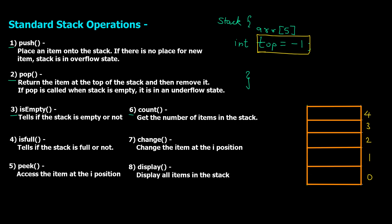For isEmpty, we check if the top value is minus one — when top equals minus one, it means the stack is empty. For isFull, we check if the top value equals four, because when five elements fill the array, top will be four. For count, change, and display, we access values using the index position since it's an array, passing the index position to change the value.